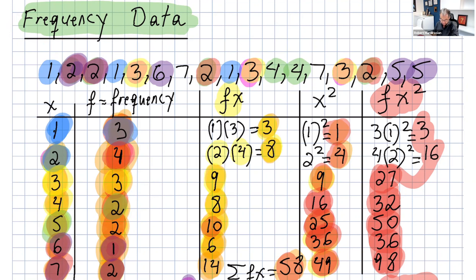So, let's say we're given these numbers: 1, 2, 2, 1, 3, 6, 7, 2, 1, 3, 4, 4, 7, 3, 2, 5, 5. Now, one thing we notice in this data — the numbers are repeated a lot.